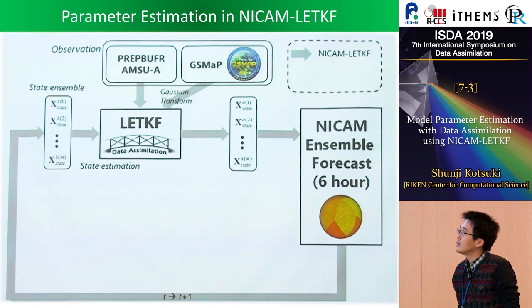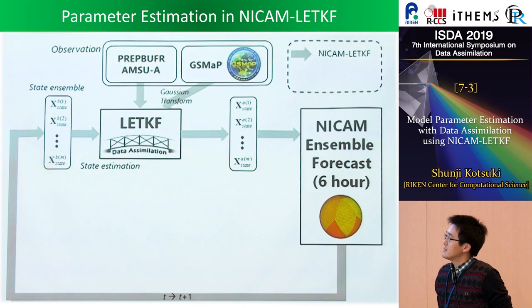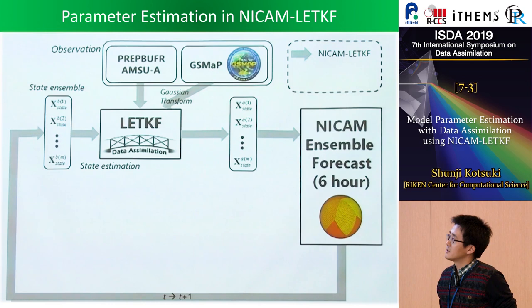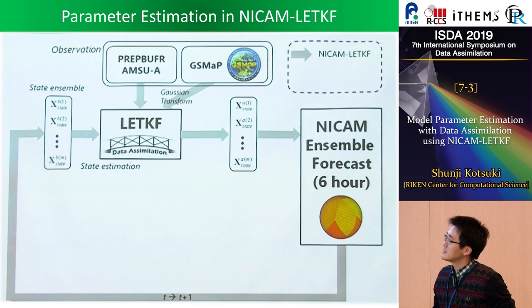This is the classical flowchart of a data assimilation system. We have an ensemble forecast from a numerical weather prediction model, and in general, we have a state ensemble as a background. We assimilate observations to update the state variables. Here, we are using LETKF, cycling this data assimilation cycle to get improved initial conditions.